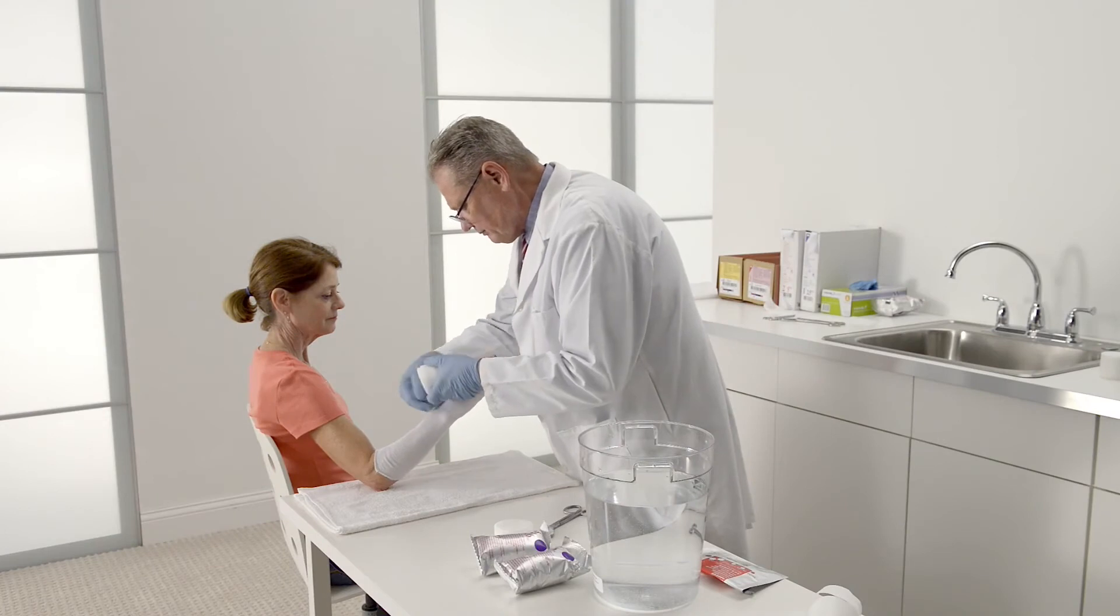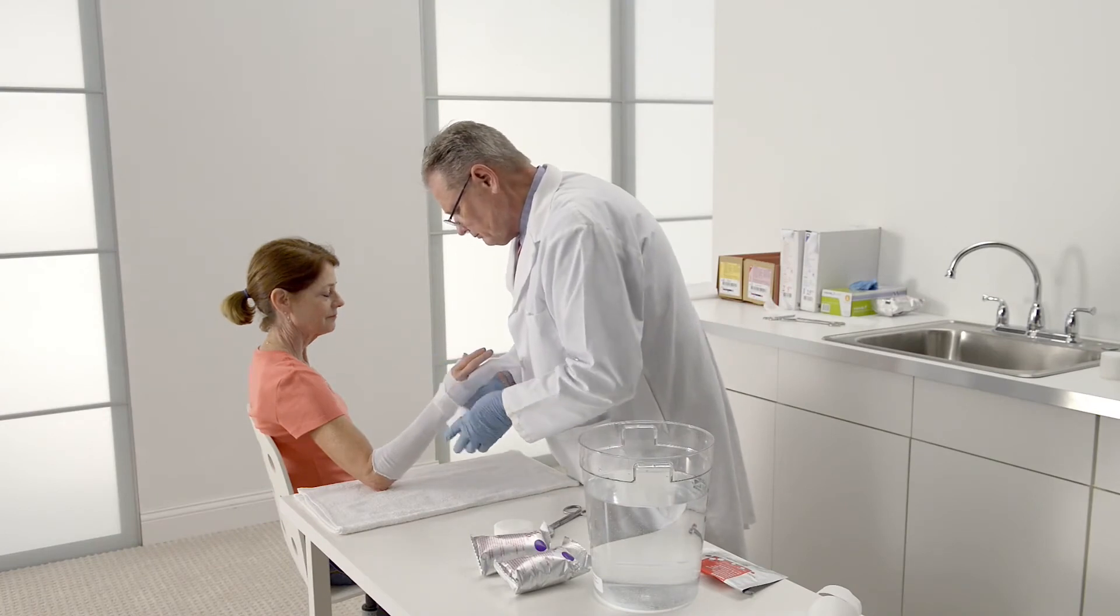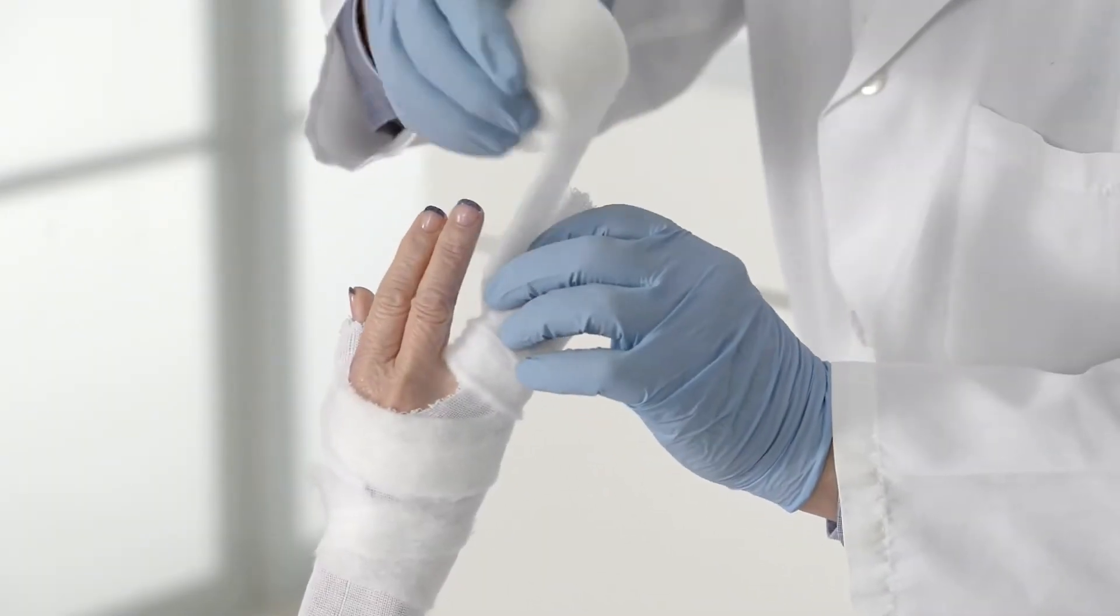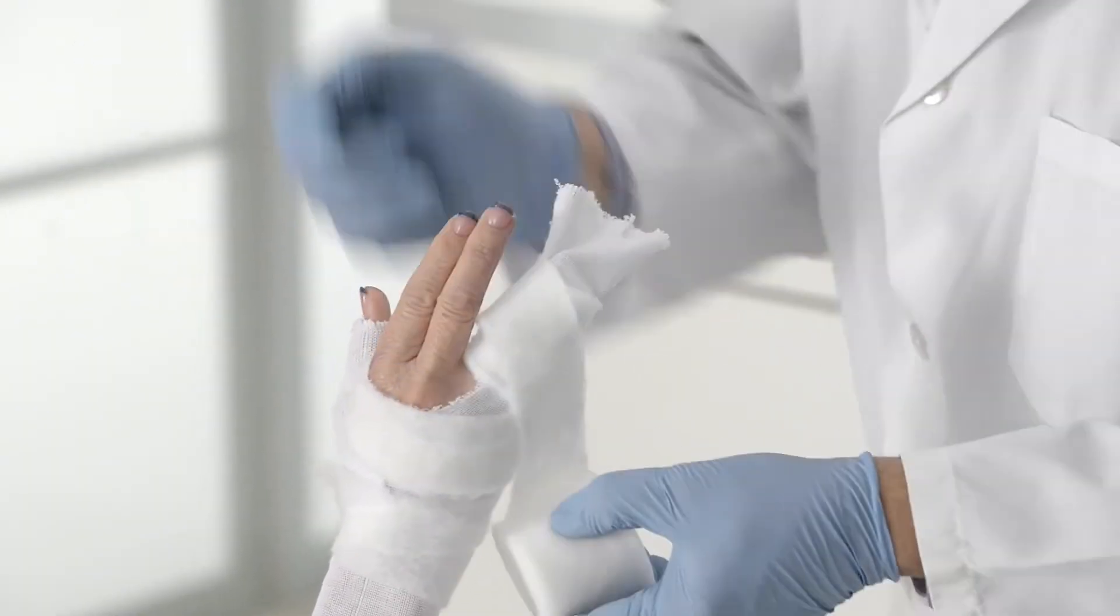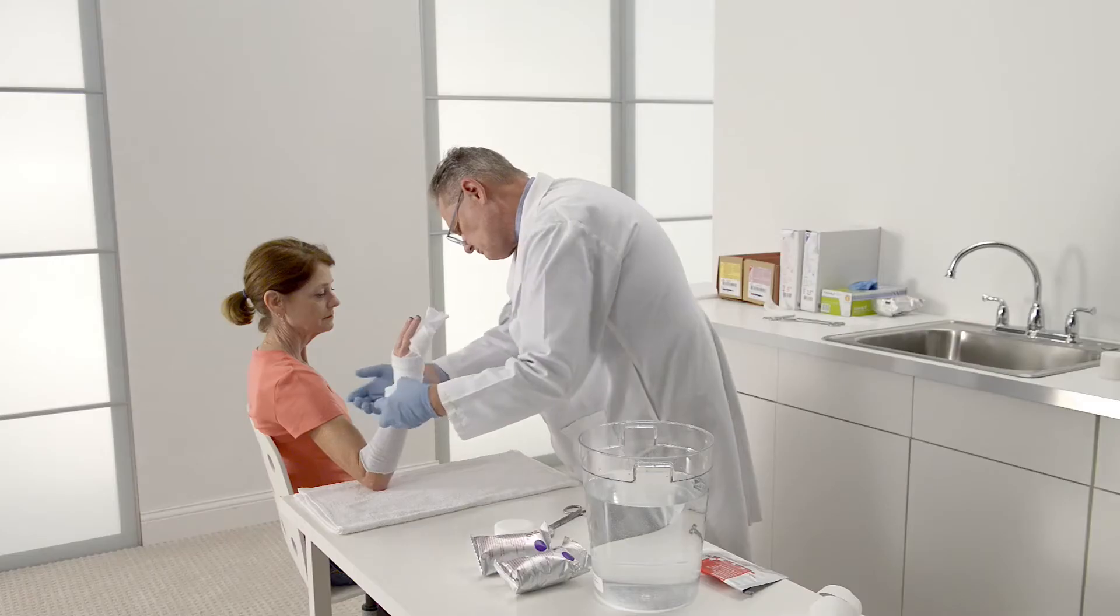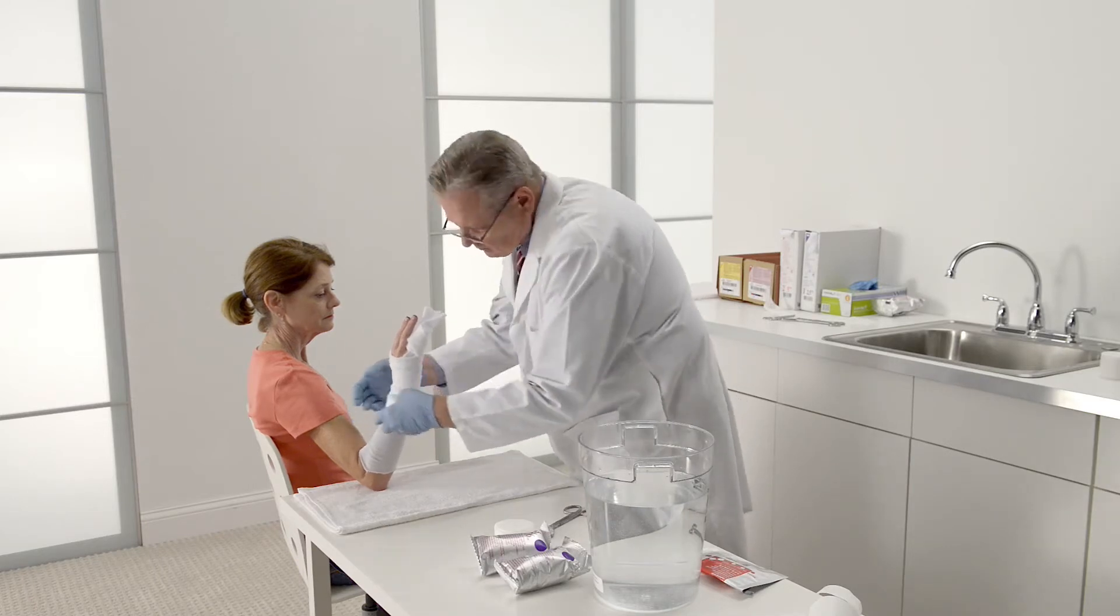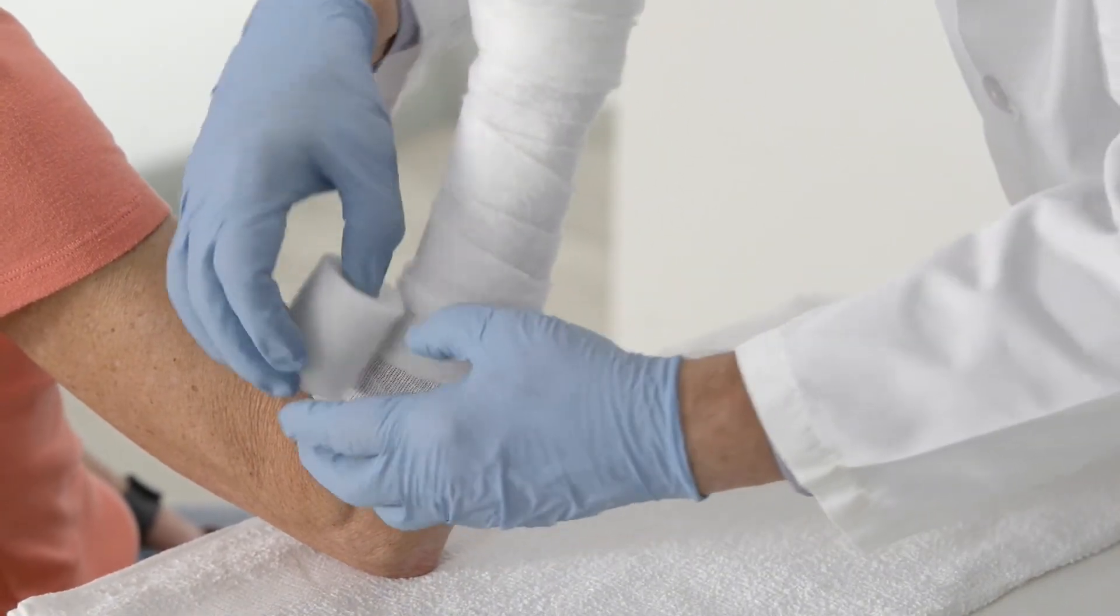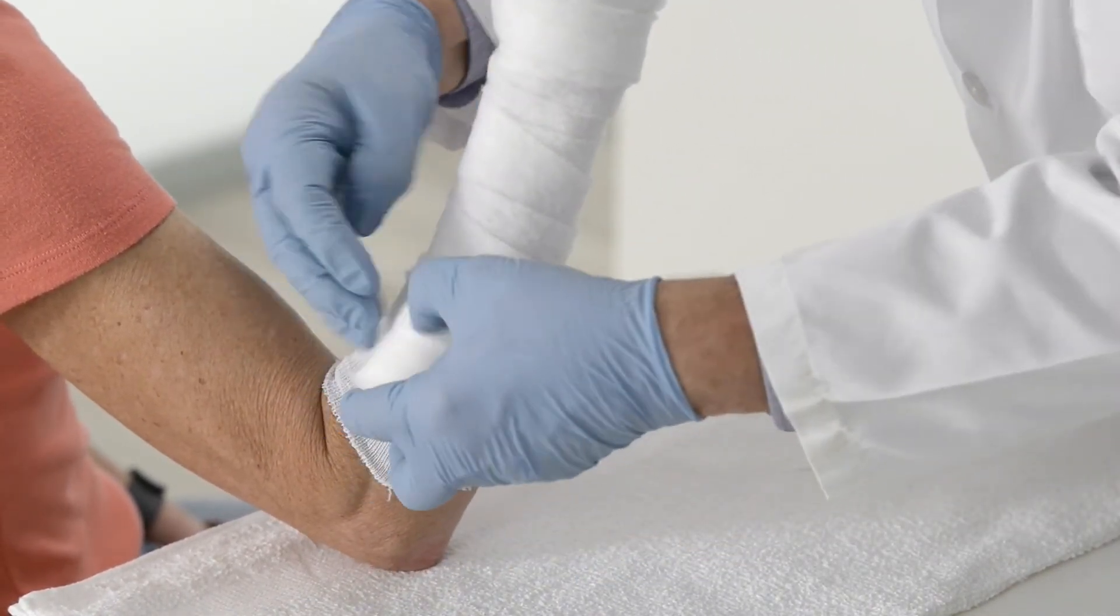Now it's time to apply the padding. Using 3M synthetic cast padding, begin at the wrist, then wrap around the fingers. Then wrap proximally, overlapping each preceding layer by 50%. Continue wrapping, stopping two finger widths below the forearm crease.